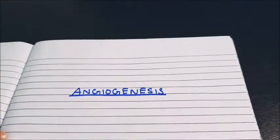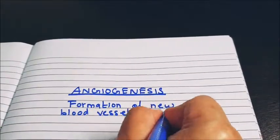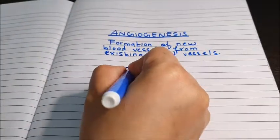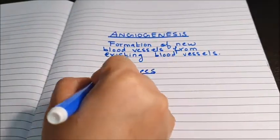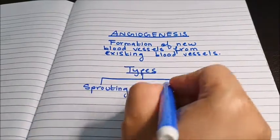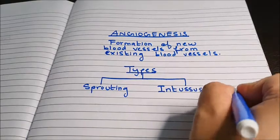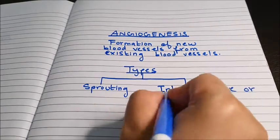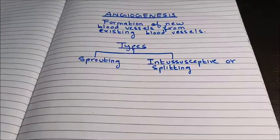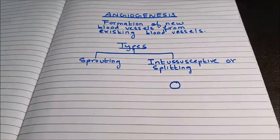Angiogenesis is the formation of new blood vessels from existing blood vessels. It has two types: number one is sprouting angiogenesis, which has been known for centuries, and number two is called intersusceptive or splitting angiogenesis, which was discovered recently. Let us discuss sprouting angiogenesis in this video.